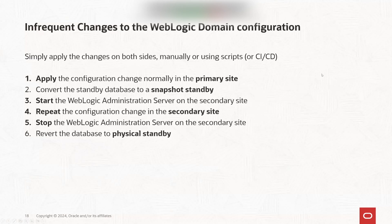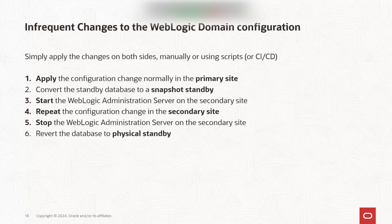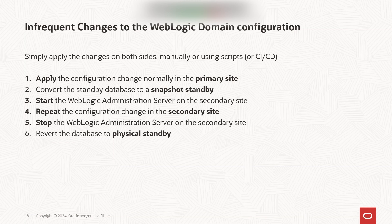For infrequent changes to the WebLogic Domain Configuration: apply the changes on both sides manually or using CI/CD scripts. Apply the configuration change normally on the primary site, then convert the standby database to a snapshot standby — otherwise it would not record changes on the secondary. Start the WebLogic administration server on the secondary side (just the admin server; managed servers are not needed), repeat the configuration change there, then stop the admin server and revert the database to physical standby. All these steps are documented, with a link at the end of the presentation.